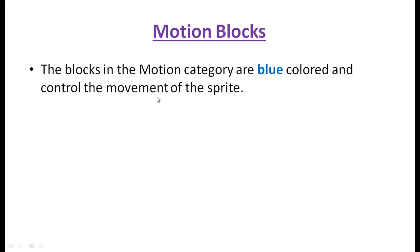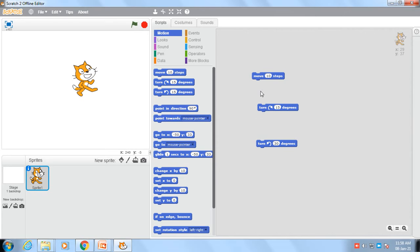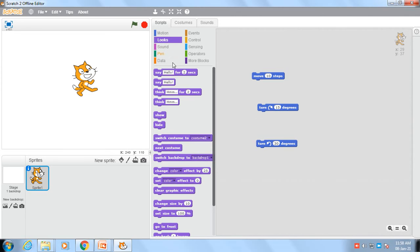Our first block is the motion block. The next block is the looks block. The blocks in the looks category are purple colored and control the appearance of the sprite. In the looks category, so many commands are there.